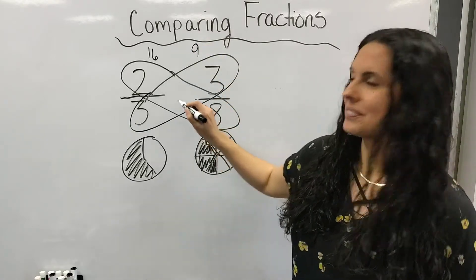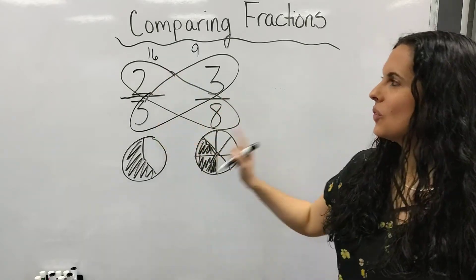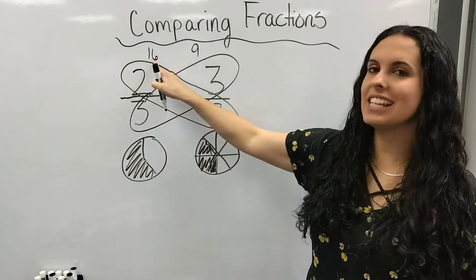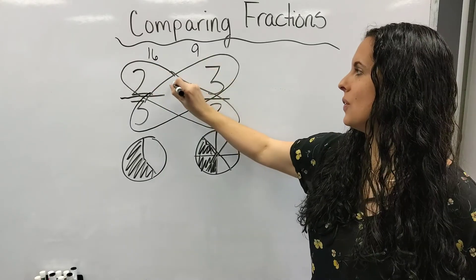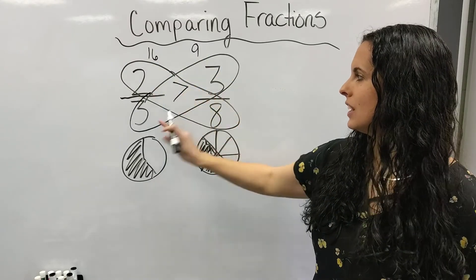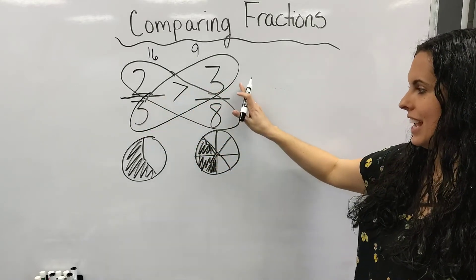Now, when I look at that, see, it looks like butterfly wings. When I look at that, 16 is larger than nine. Therefore, when I draw my symbol, this is greater than three-eighths.